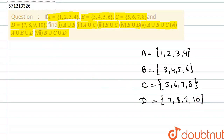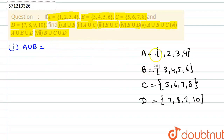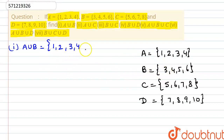So if we look at our first part, we are given to find out A union B. That means we have to look at A and B only. For A union B, we first write all the elements of A: {1, 2, 3, 4}. Then we write the elements of B, but 3 and 4 are already there, so we neglect those and write directly 5 and 6. So this is A union B.